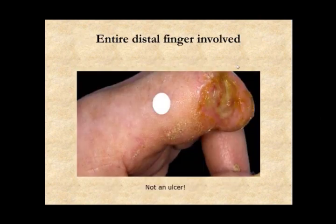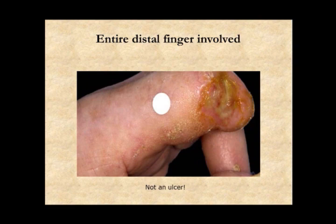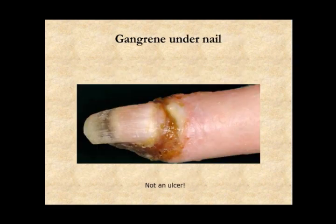If the entire distal finger is involved by a lesion, the consensus of the group was that this should not be considered a digital ulcer. These are often a prelude to the development of gangrene at the fingertip, which is also not an ulcerative lesion. This is an example where there is clear gangrene under the nail. This whole lesion, somewhat proximal to that, which encircles the finger, should not be considered a digital ulcer for the purposes of any therapeutic trial.